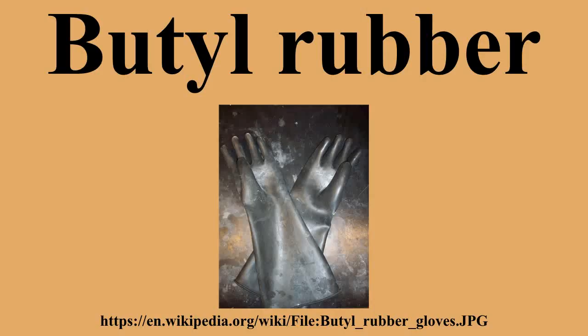Butyl rubber is used for the bladders in sporting balls to provide a tough, airtight inner compartment. Butyl rubber sealant is used for damp proofing, rubber roof repair, and for maintenance of roof membranes. It is important to have the roof membrane fixed, as a lot of fixtures can considerably loosen it.